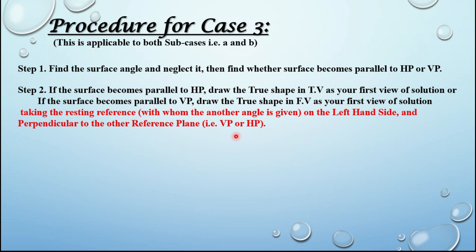For example, if the surface becomes parallel to HP, draw the true shape first as your first view, then take the resting reference — with whom the other angle is given — on the left-hand side, perpendicular to VP. If the surface becomes parallel to VP, then the front view will be drawn first and the resting reference with whom the other angle is given will be perpendicular to HP.